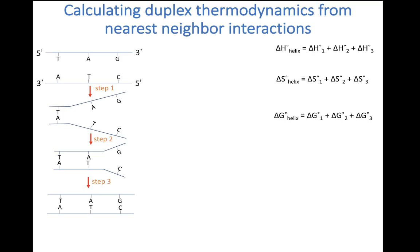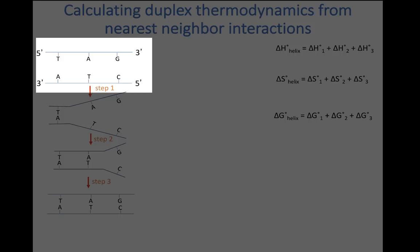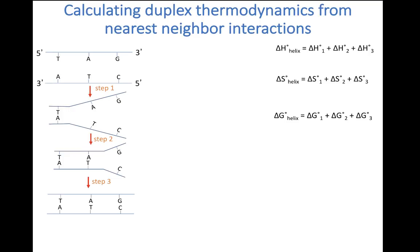Here is the procedure we'll use to calculate the free energy, enthalpy, and entropy of helix formation. Imagine that we have two three-nucleotide-long pieces of single-stranded DNA that are complementary to one another. The calculation depends upon the fact that enthalpy, entropy, and free energy are all state functions. That means the change in these properties in going from one state to another is independent of the path taken. So if we can break the process of duplex formation into a series of discrete steps for which we know the values of the state functions for the individual steps, then we can just add those values together to get the change for the overall process of duplex formation.